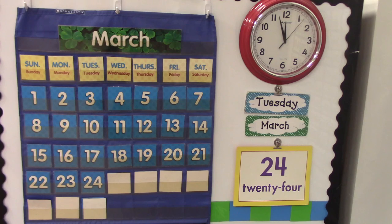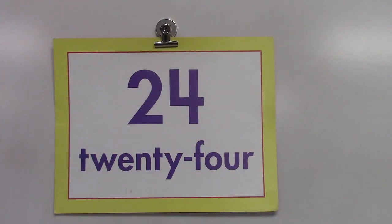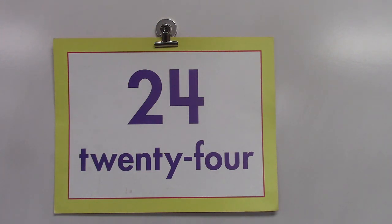Good morning! Today is Tuesday, March 24th — the fourth Thursday of the month. How many more days do we have in March? Count with me: 1, 2, 3, 4, 5, 6, 7 — there are seven more days in March. Today is the 24th. Is 24 an even number or an odd number? It's an even number! All numbers that end in 0, 2, 4, 6, or 8 are even numbers.